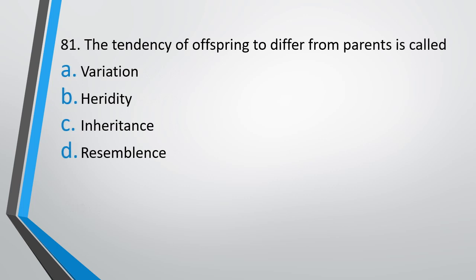Question number 81. The tendency of offspring to differ from the parent is called: (A) variation, (B) heredity, (C) inheritance, (D) resemblance. The correct answer is option A, variation.